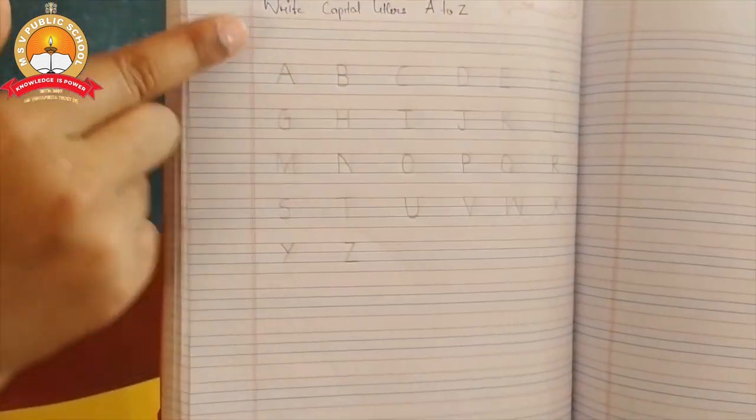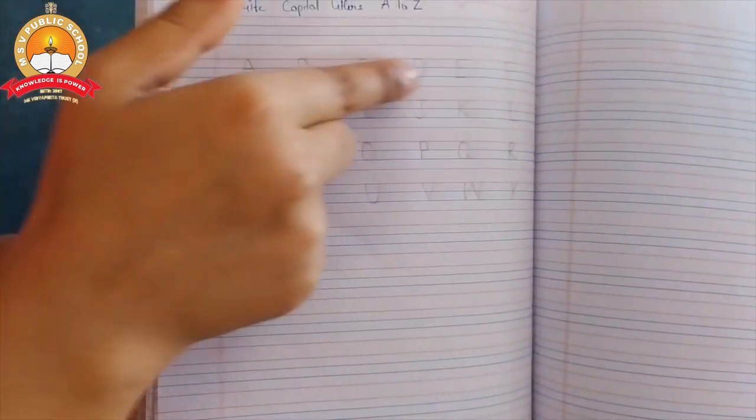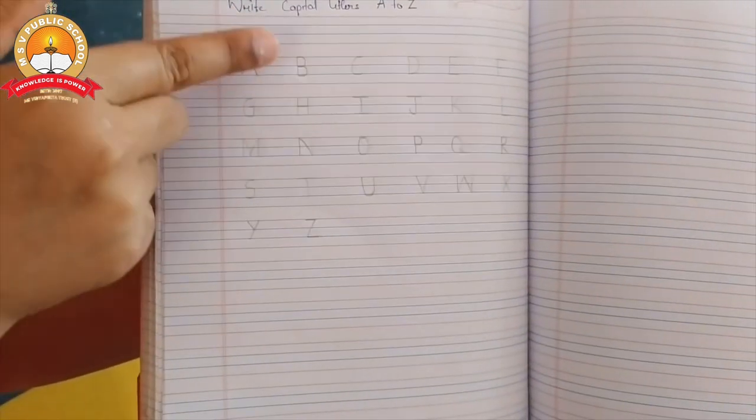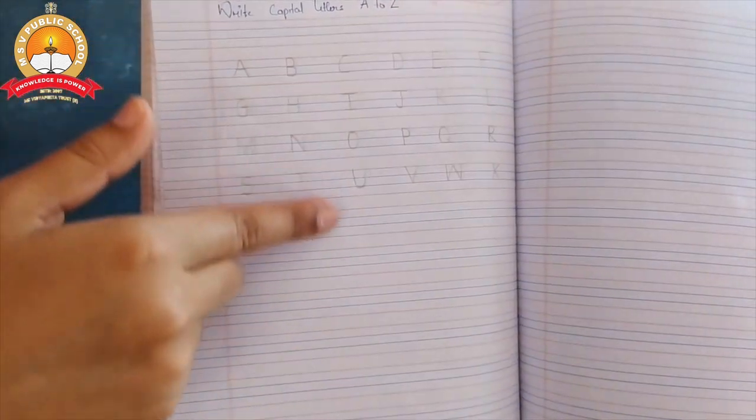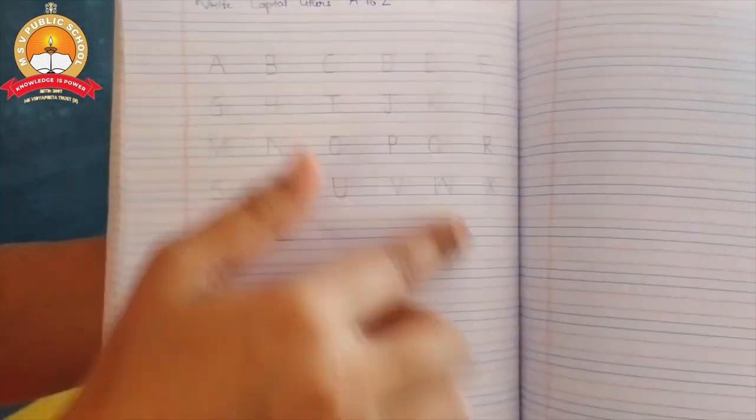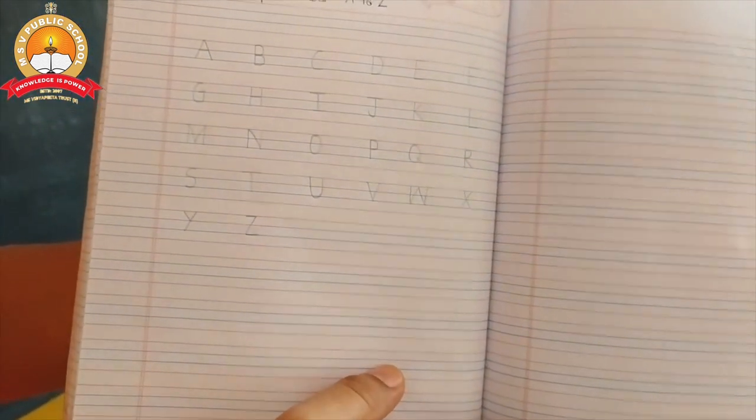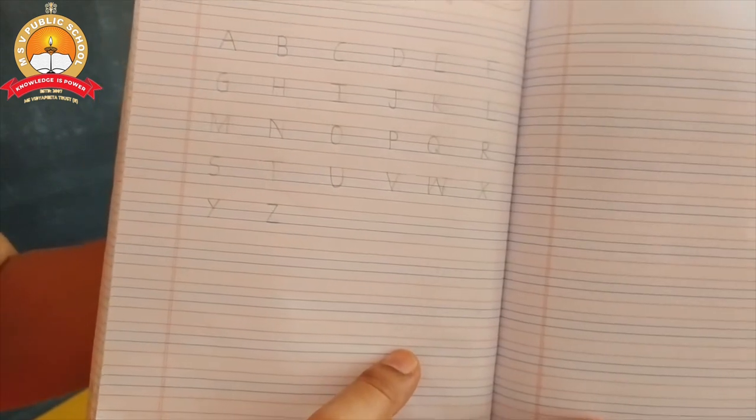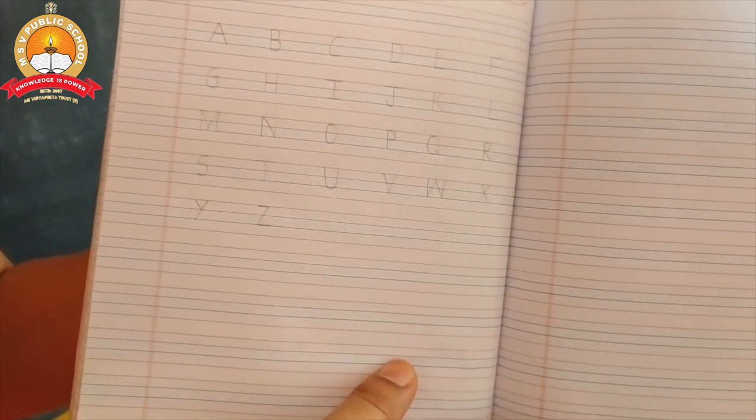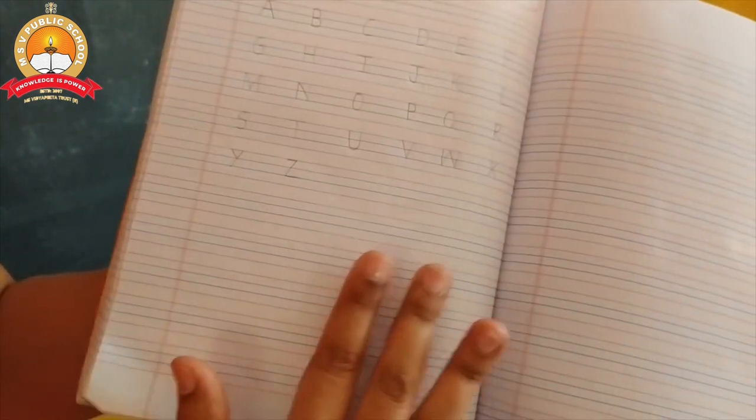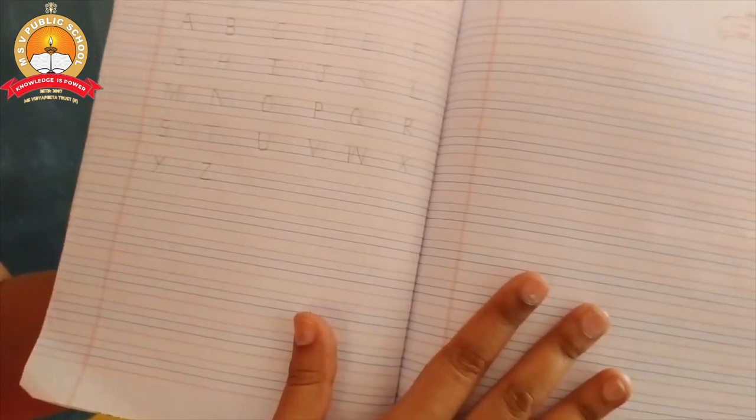And then, if you want to get full marks, what you have to do is, standing line should be straight, sleeping line should be straight. And see, there should be a gap between every letter. And this is how you write letters A to Z. So, for today's assignment, I want you to write neatly on both the pages and submit it.